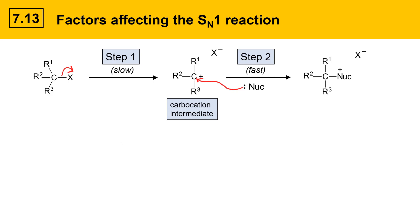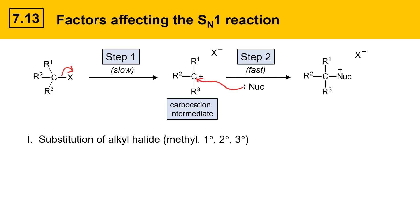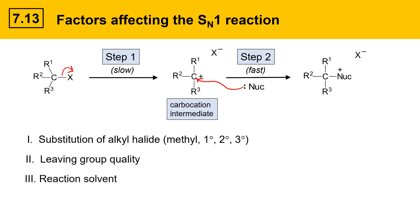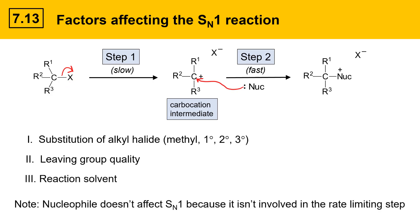The first factor we'll look at is the substitution of the alkyl halide — in other words, are the R1, R2, and R3 groups hydrogens or carbon groups? The next factor is leaving group quality: how good of a leaving group is X? We'll also explore how solvent impacts the reaction. Notice that the nucleophile isn't in this list — nucleophile doesn't affect the SN1 reaction because it isn't involved in the rate-limiting step.